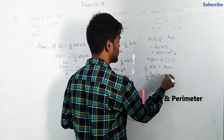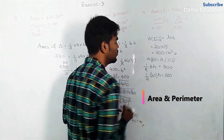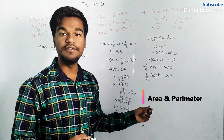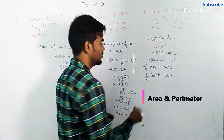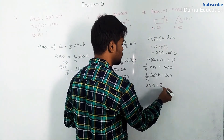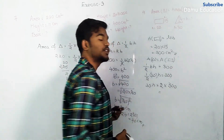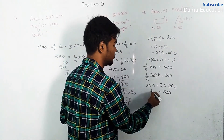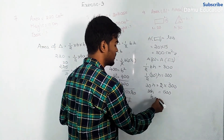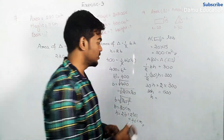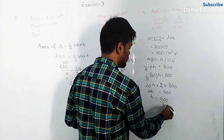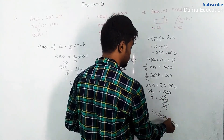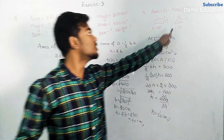Area of triangle equals half into base into height, so: 300 equals half into 30 into H. Shifting the half to the right side gives 2 into 300 equals 30 into H, so 600 equals 30H. Shifting 30 to the right side gives H equals 600 divided by 30, which equals 20 centimeters.